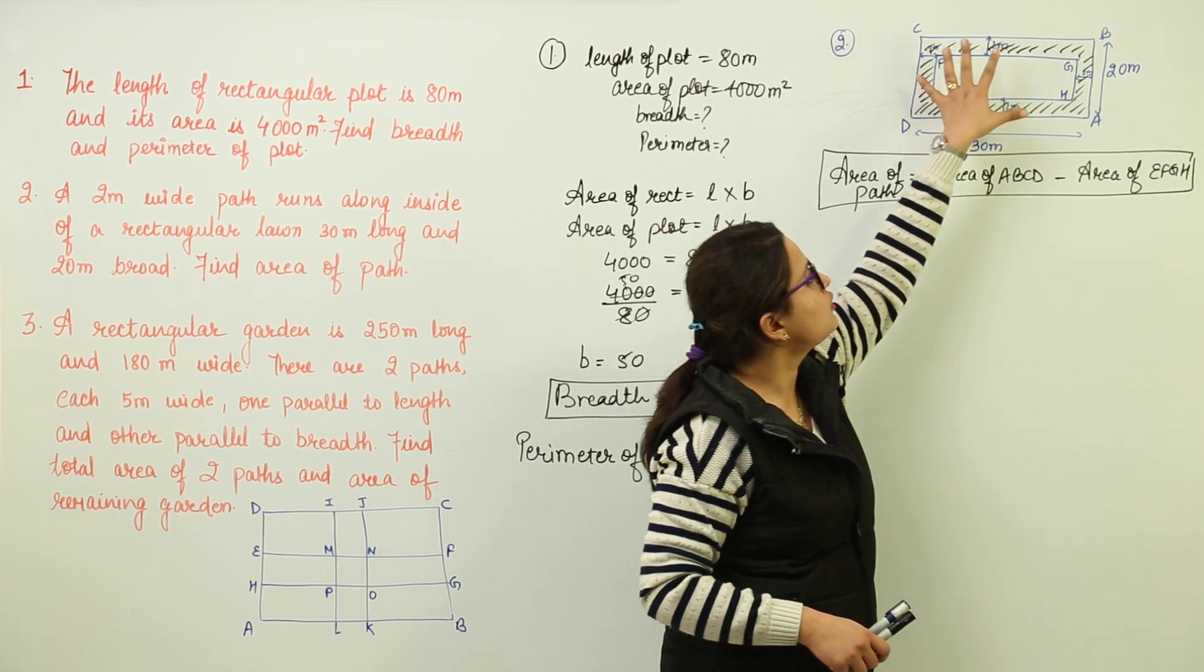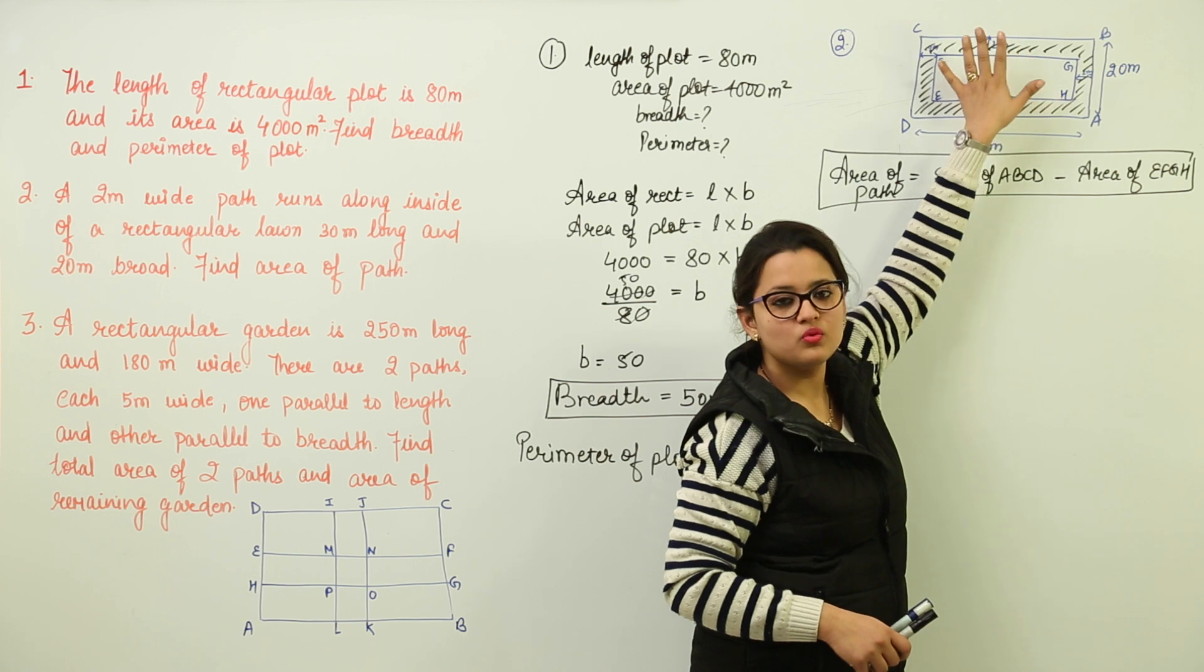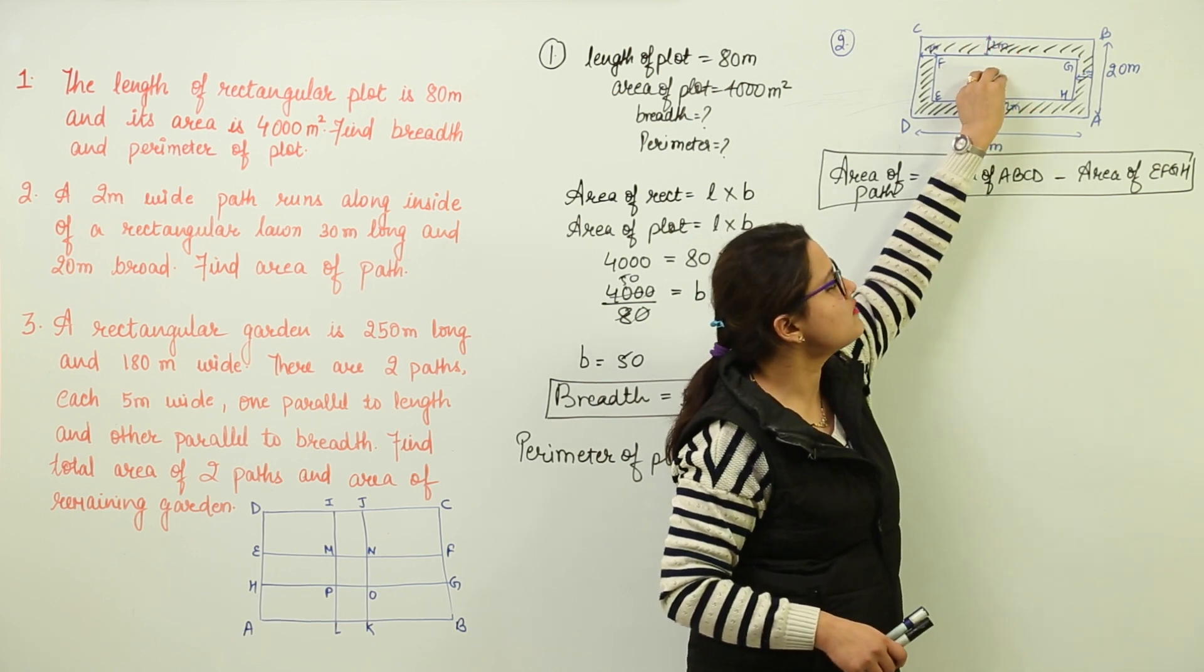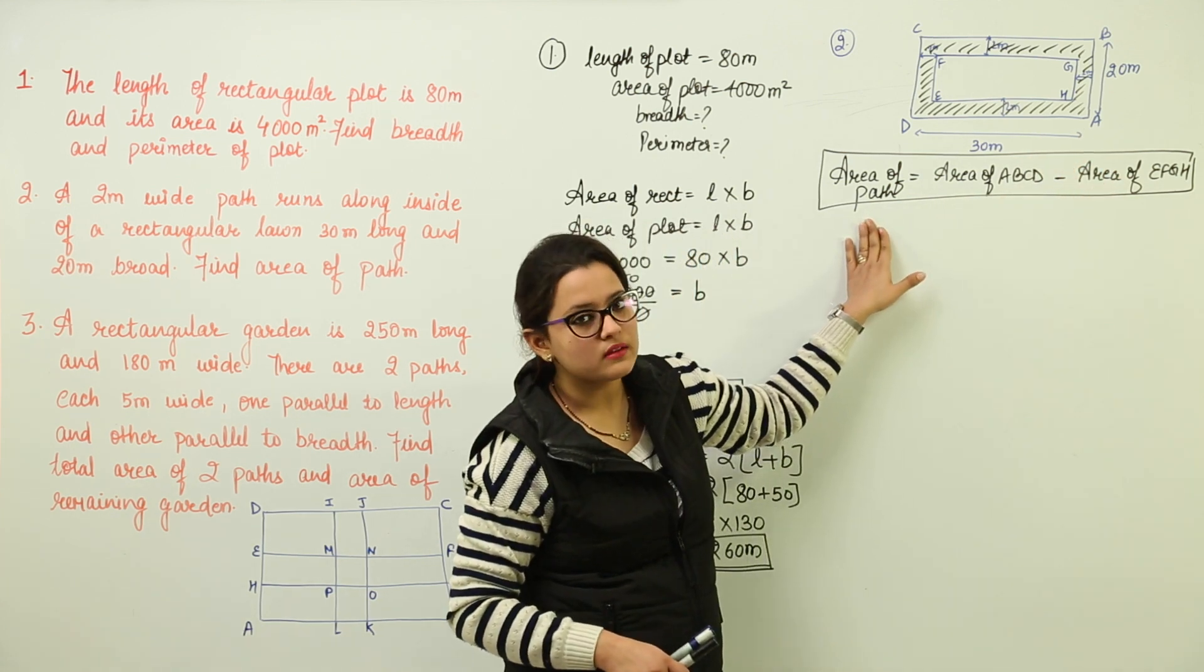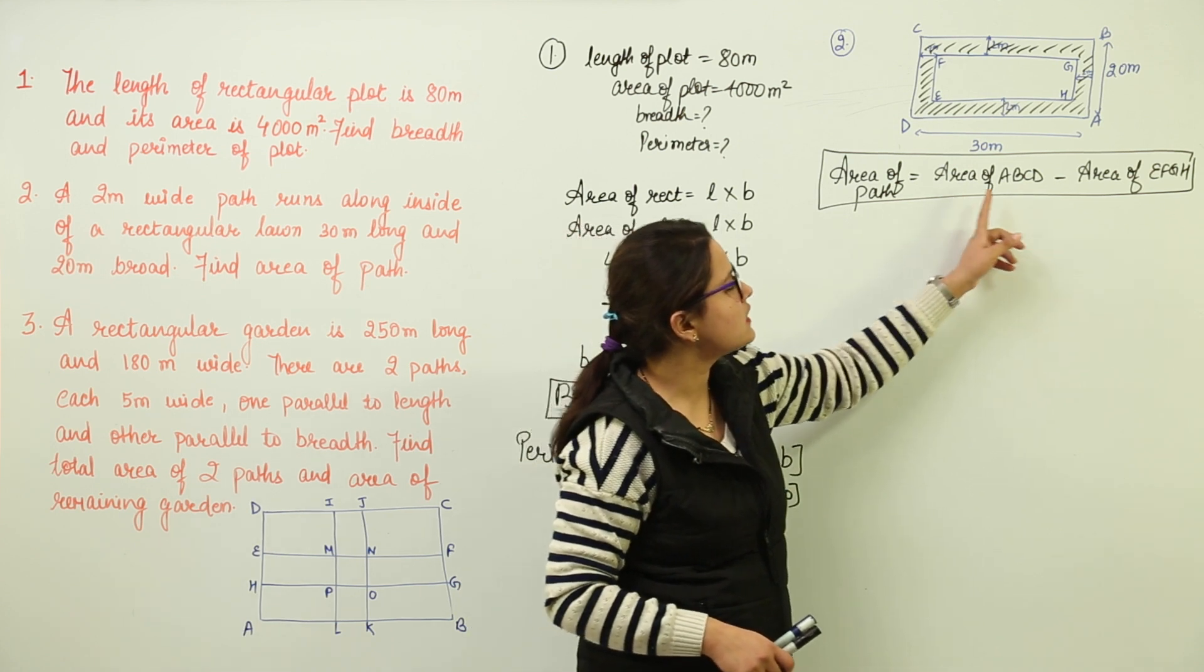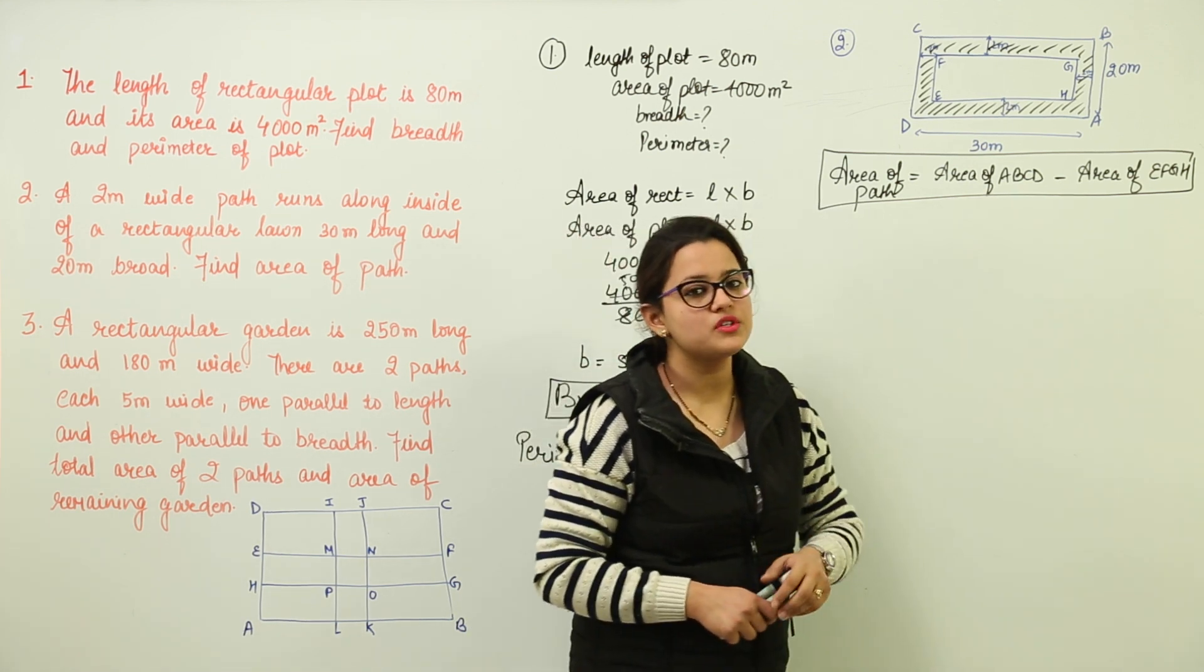That means from the total area ABCD you will have to subtract this particular portion that is EFGH and you will get your area of the path. So that means we are going to get it as soon as we get the area of ABCD and EFGH.